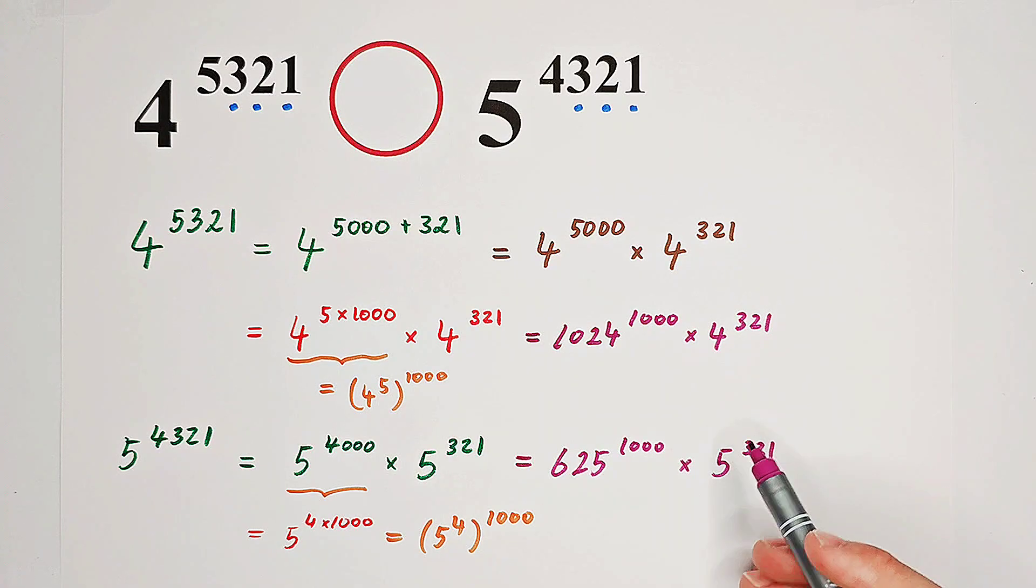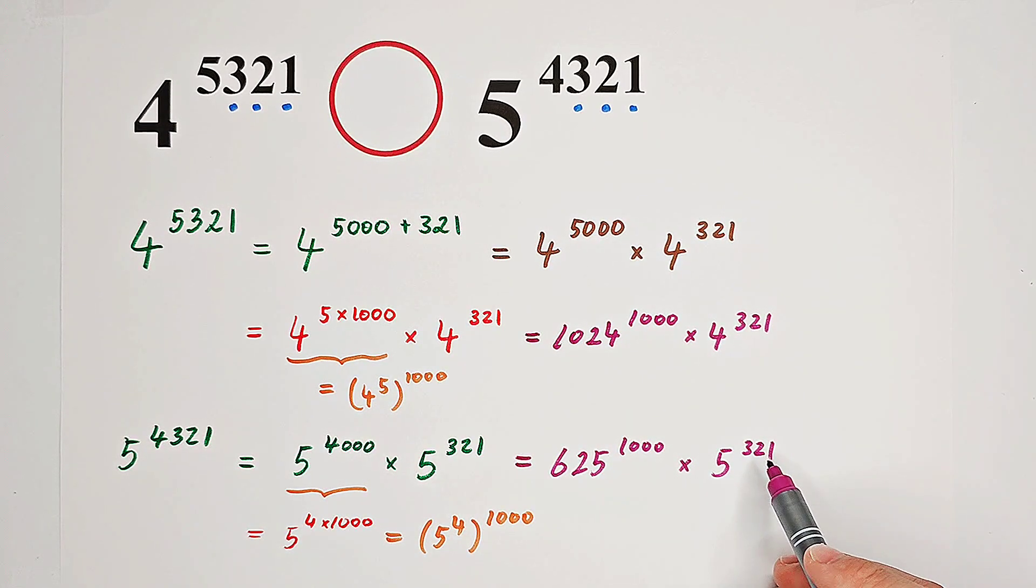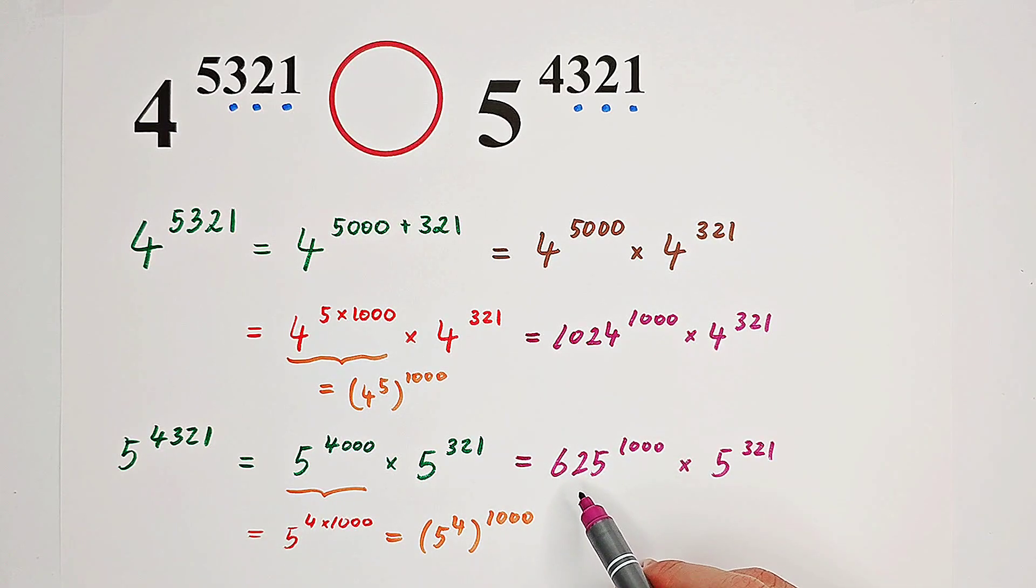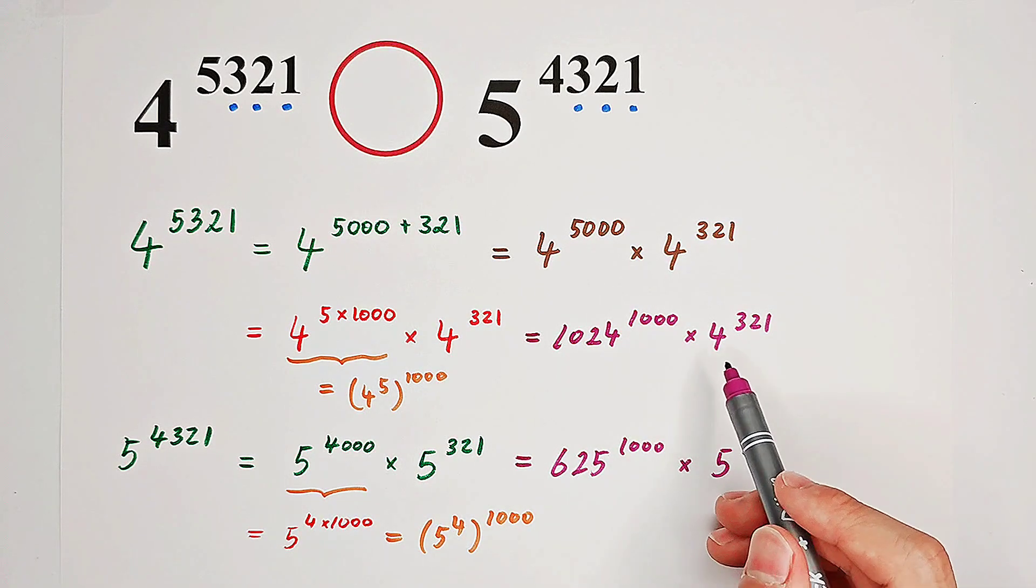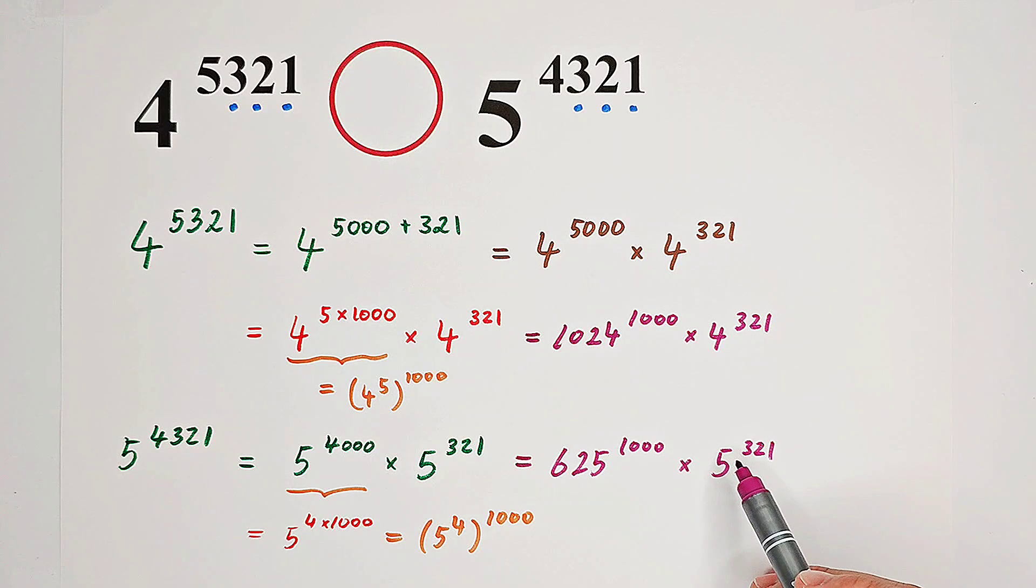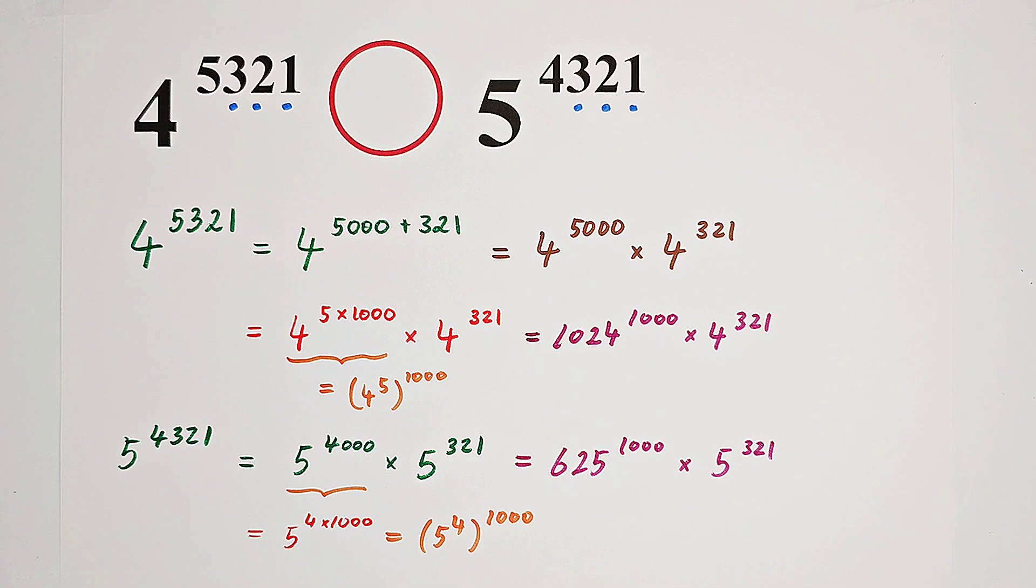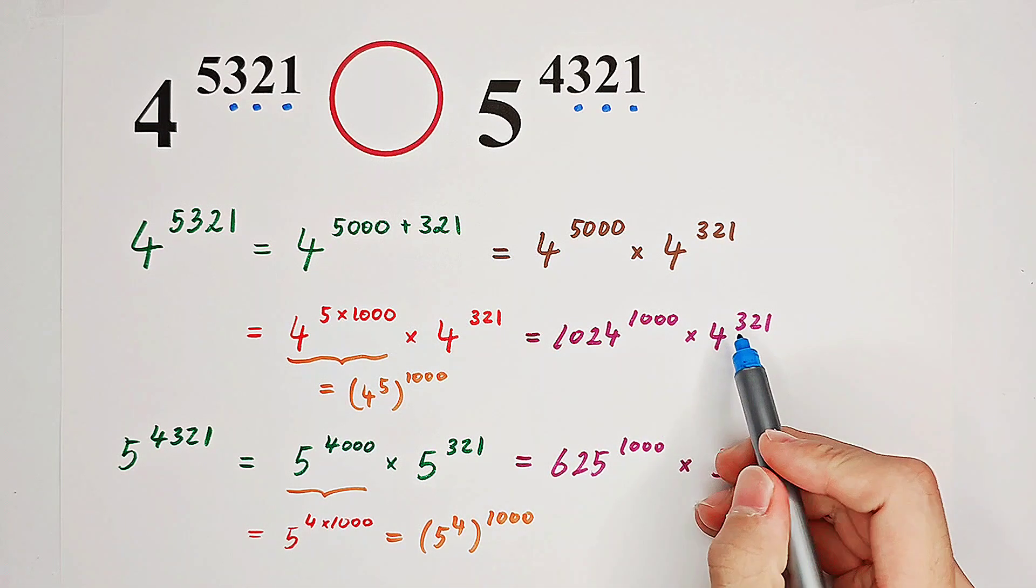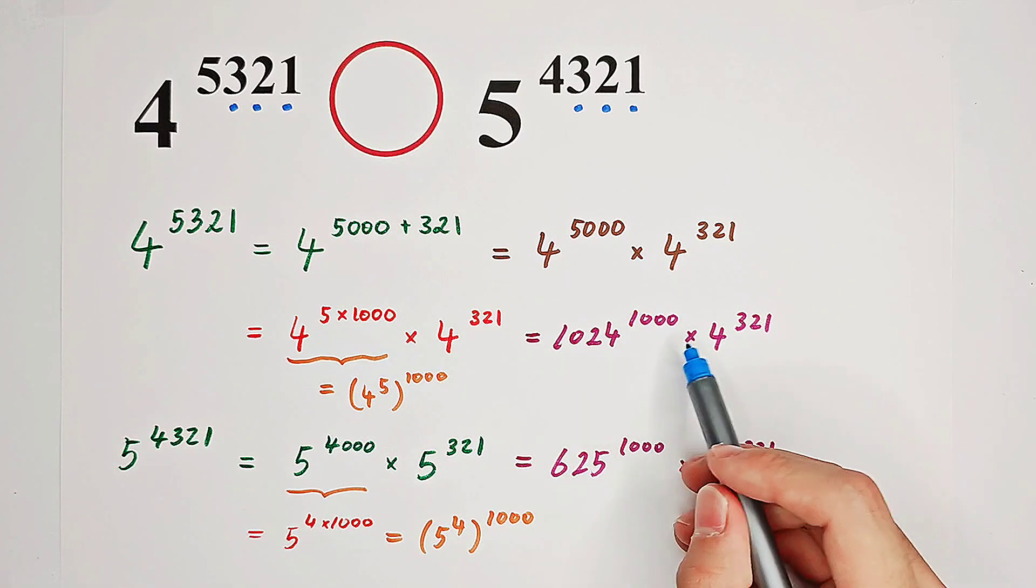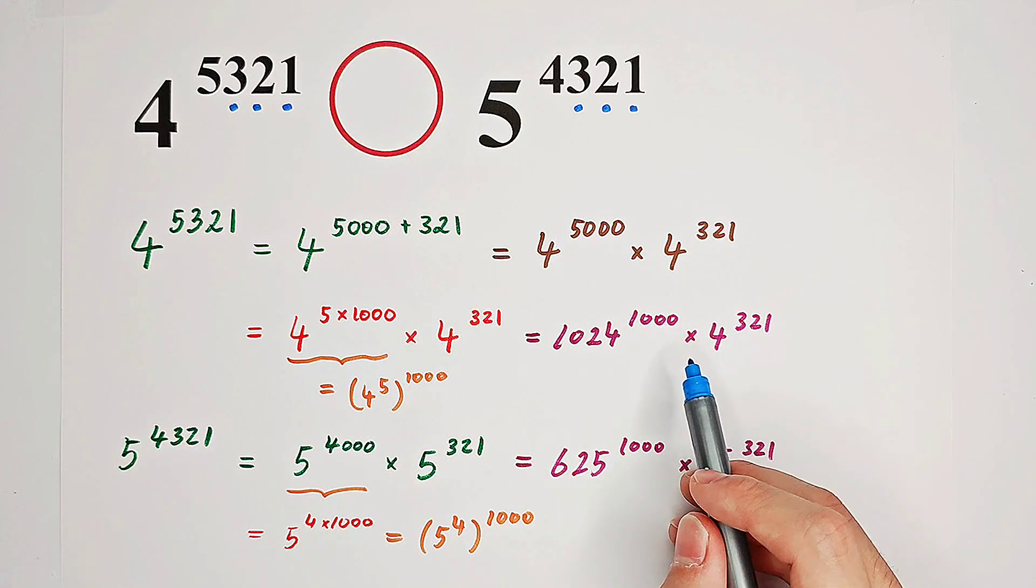We cannot compare these two terms written in pink, although they have the same exponents. 1,024 is greater than 625. 4 is less than 5. So that's why we cannot compare them directly. But now I have a trick. We can separate a 321 from this 1,000. Then let's have a look.